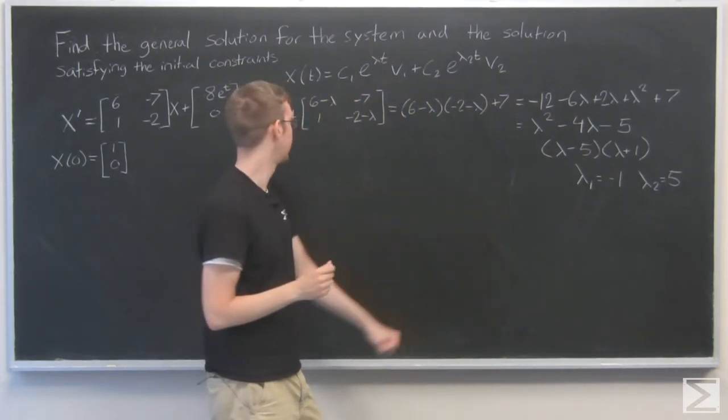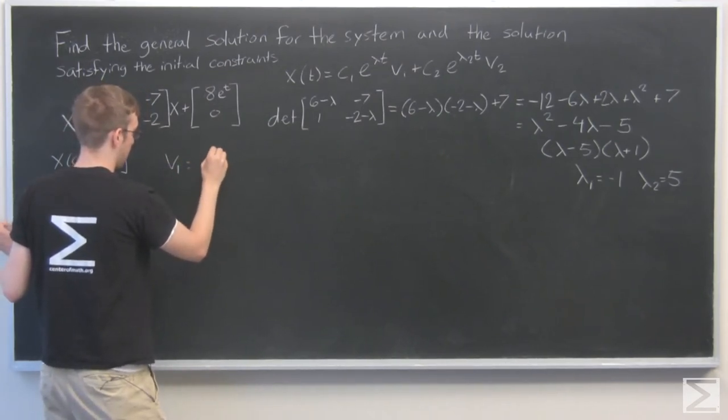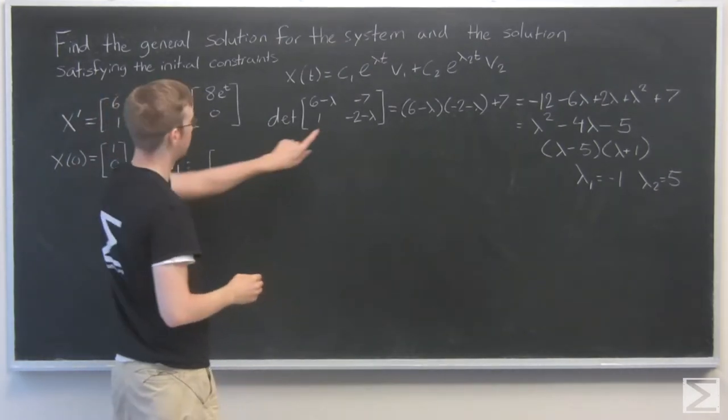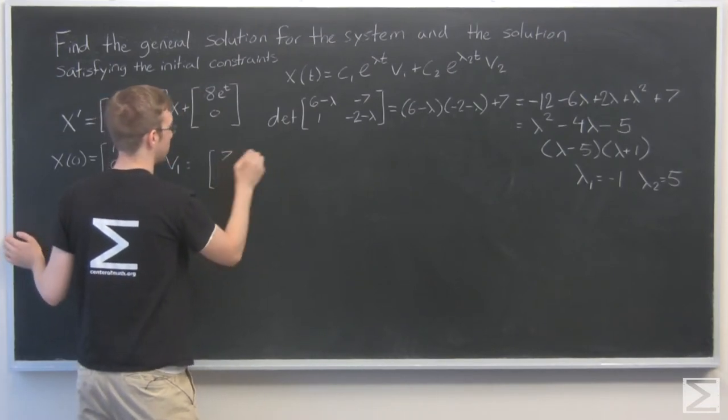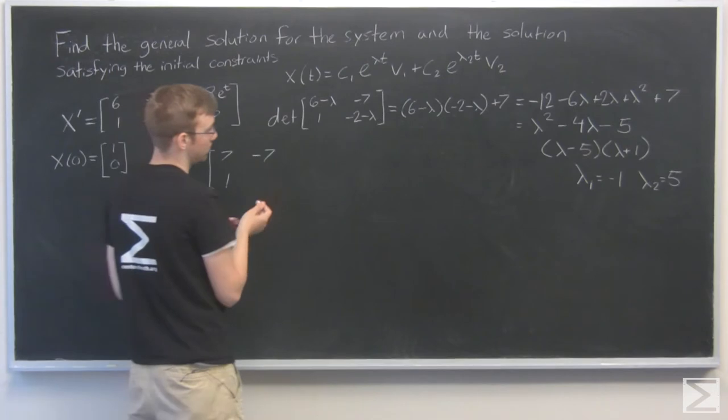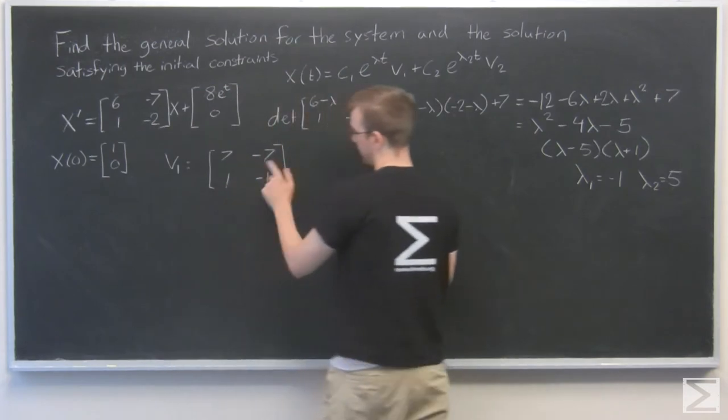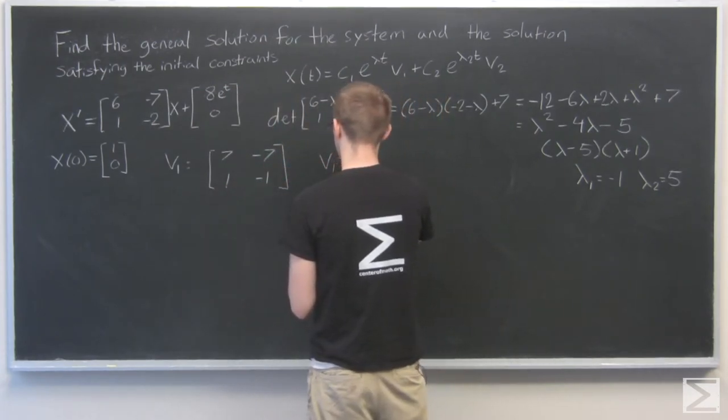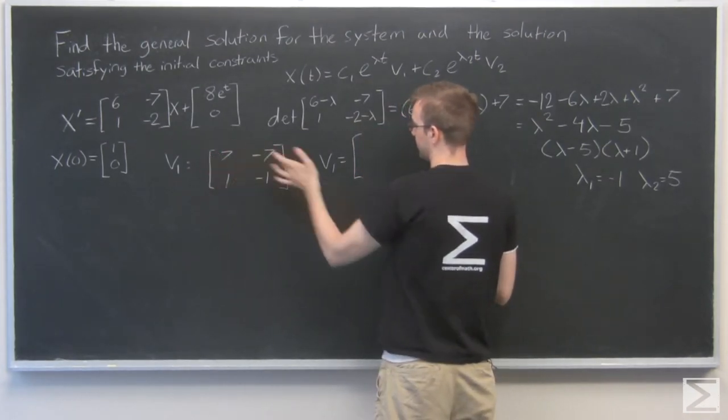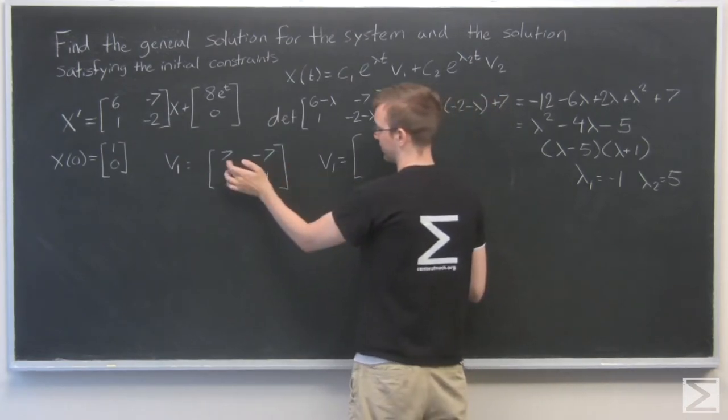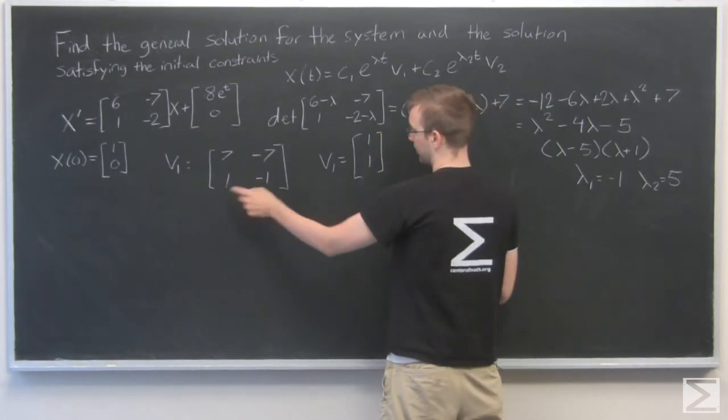Now we have our eigenvalues, we need our eigenvectors. So, eigenvector 1: I'm going to take -1, put it in there, see what happens. So, 6 - (-1) = 7, minus 7, minus 2, plus 1 is -1. So I have 7 minus 7, 1 minus 1. So my vector v1, it needs to be such that if we multiply that by that, we get 0. So because 7 minus 7 is 0, our vector 1 is just [1, 1], because 1 minus 1 is 0 as well.